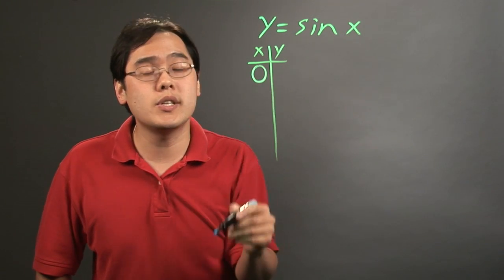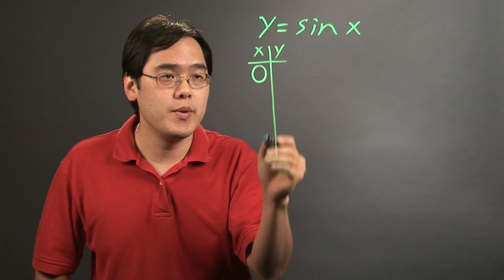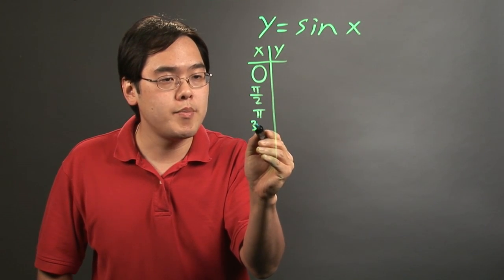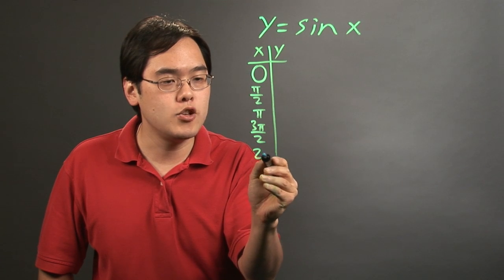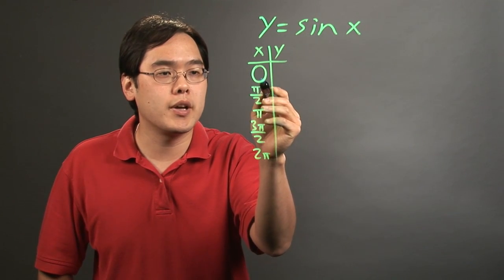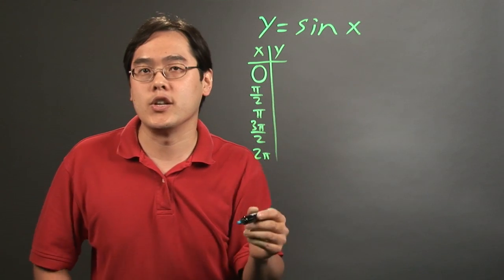It's always nice to start out with the angle 0, and then pi over 2, pi, 3pi over 2, and then 2pi, just to close out the cycle. What you're going to do is plug in all of these individually in place of x, and you'll go from there.